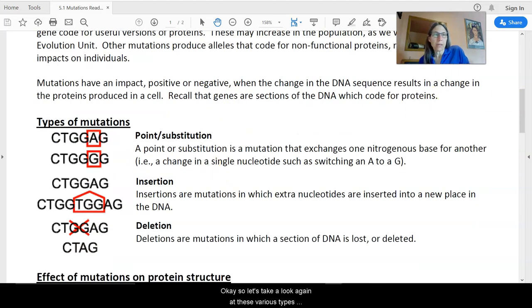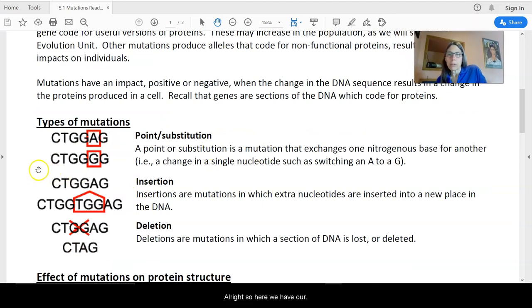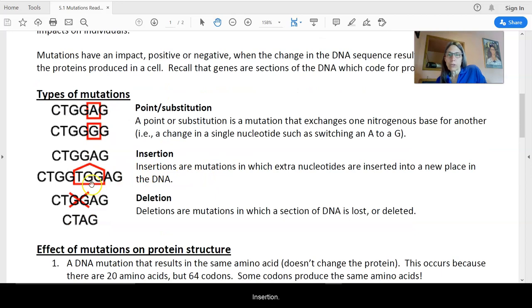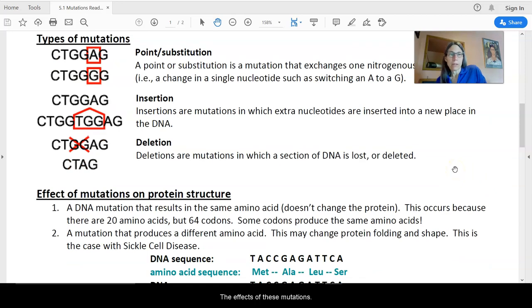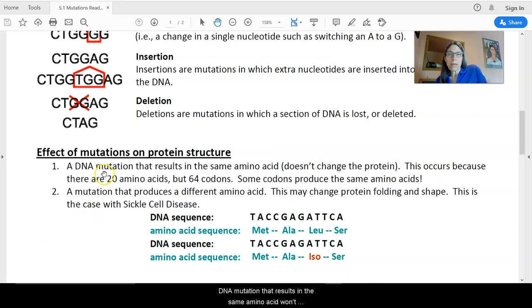So let's take a look again at these various types of mutations which can occur. So here we have our point mutation with the substitution here when we have an A being replaced with a G. Insertions, extra nucleotides have been inserted here. Deletion, we're now missing nucleotides from the DNA strand. Now, the effects of these mutations. A DNA mutation that results in the same amino acid won't change the protein. So, why is that possible? Well, if you remember the way that the DNA to protein code works, there are 64 codons, but there are only 20 amino acids. So, some codons code for the same amino acid. So, that means it might not change the amino acid at all.